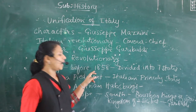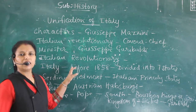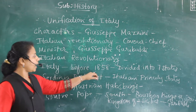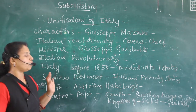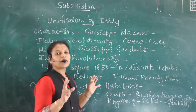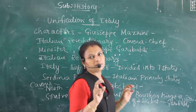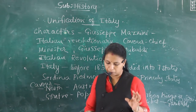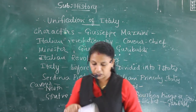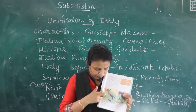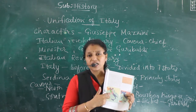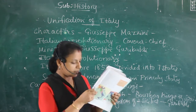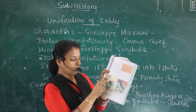Before 1850, Italy was divided into seven states. You can see on the map that Sardinia-Piedmont — shown in brown color — was the real Italian princely state.